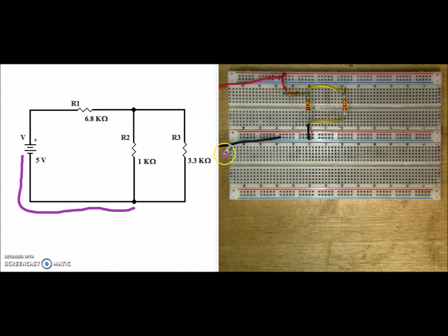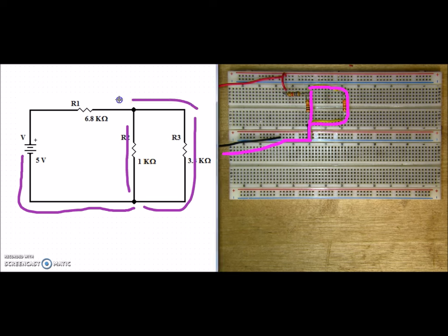So here is our current coming through the negative through the power bar into the node. Current then splits up and goes through R2 and through R3. Our current continues on through R2 and because of the jumpers loops around R3 where they combine.